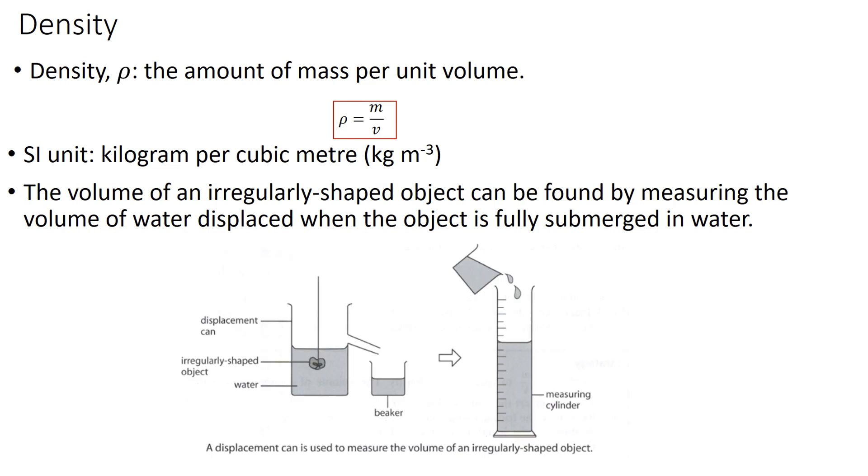This diagram illustrates how to conduct this experiment. We need a displacement can and an irregularly shaped object is submerged in the water. So the water, when displaced, is filled into a beaker. Then we can measure the volume of the water using a measuring cylinder.